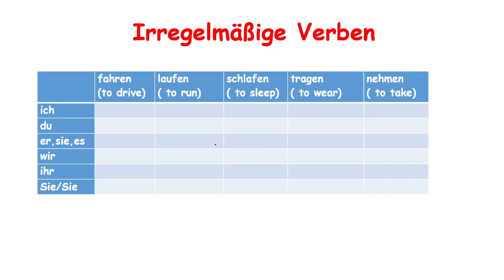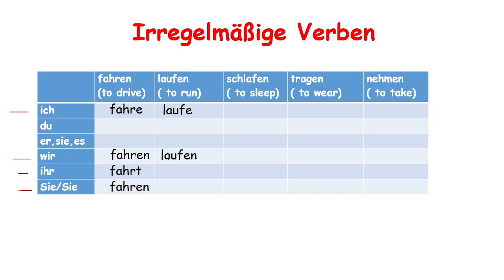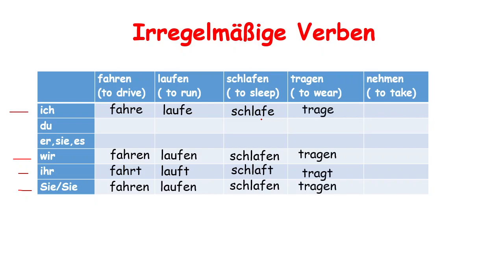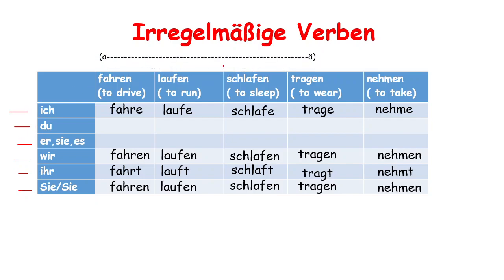Let's see one more rule. As we already know, ich, wir, ihr, and sie are the same as in regular verbs. But with du and er/sie/es, we change 'a' to 'ä' (a with umlaut) — for example with fahren and similar verbs.